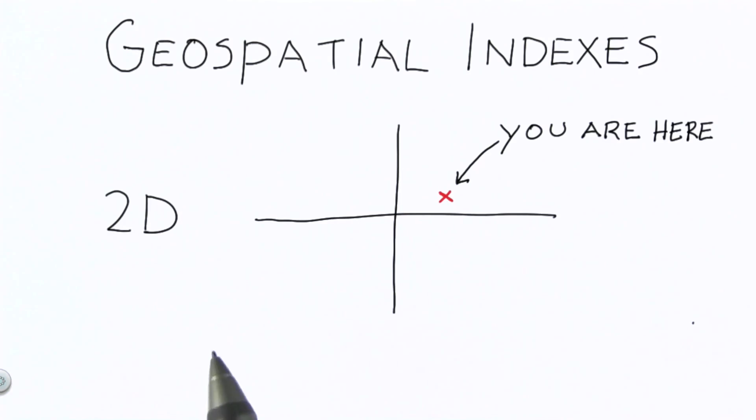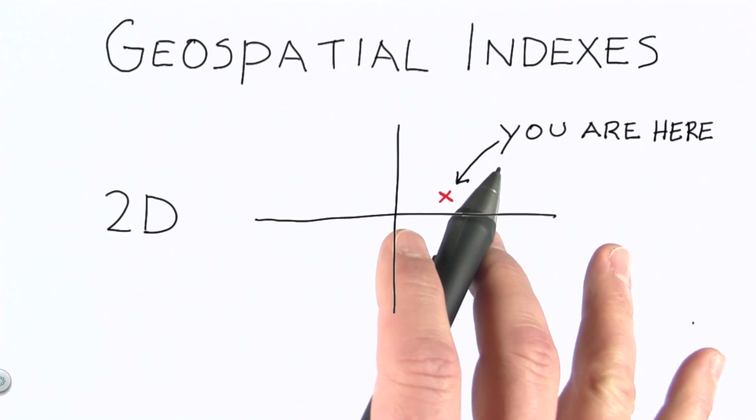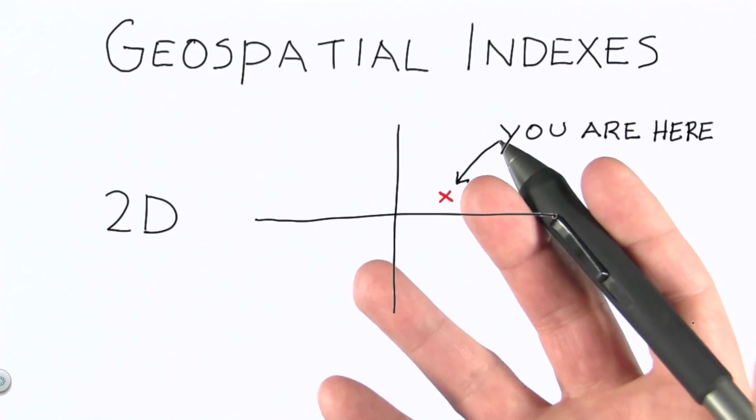Now I'd like to talk about another type of index, geospatial indexes in particular. Support for geospatial indexes in MongoDB gives us the ability to perform queries for locations near another location. This is the type of thing that a lot of phone apps will do when you're looking for a nearby cafe.